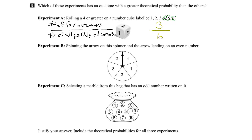Now let's try experiment B. What's the theoretical probability of spinning the arrow and it landing on an even number? Let's look at all the possible places the arrow could land. It could land on each of the 5 sections. So there are 5 possibilities, and the number on the bottom of our ratio is 5 to represent all the possible outcomes, all equally likely.